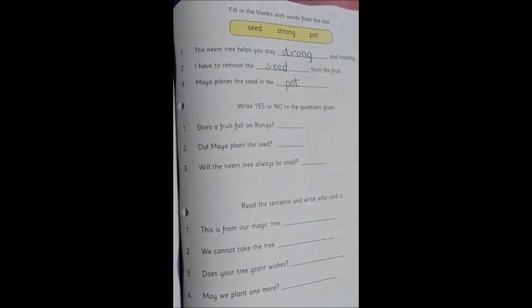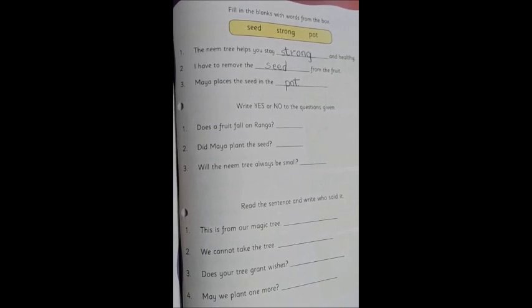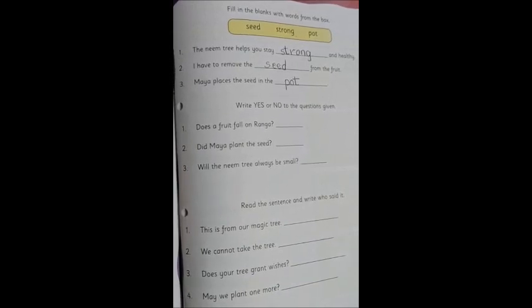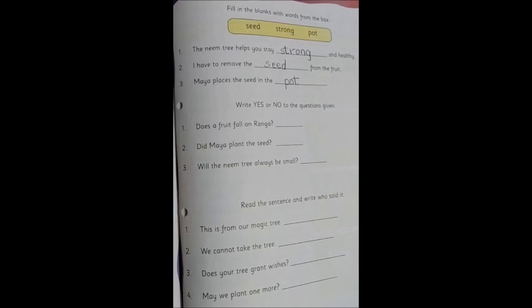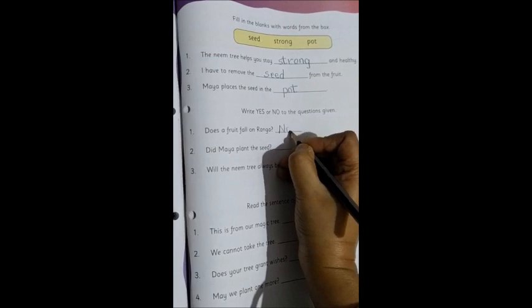Now we move to the second segment. Write yes or no to the questions given. So there is a question given. We have to answer yes or no. Does a fruit fall on Ranga? No, the fruit does not fall on Ranga. But does it fall on the ground? So we will write the word N-O, no.